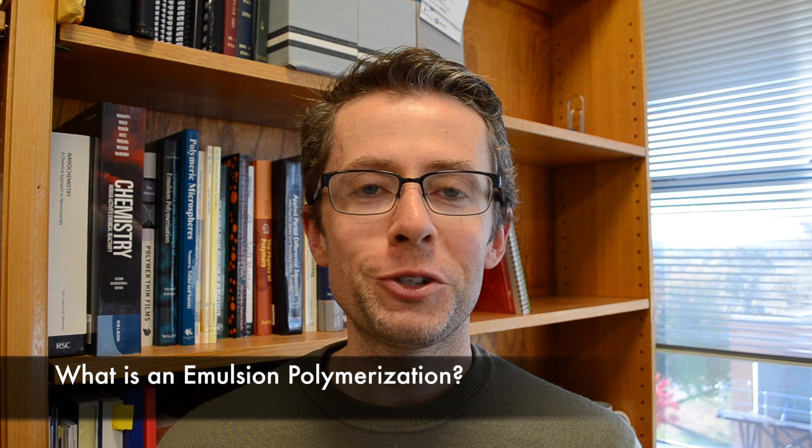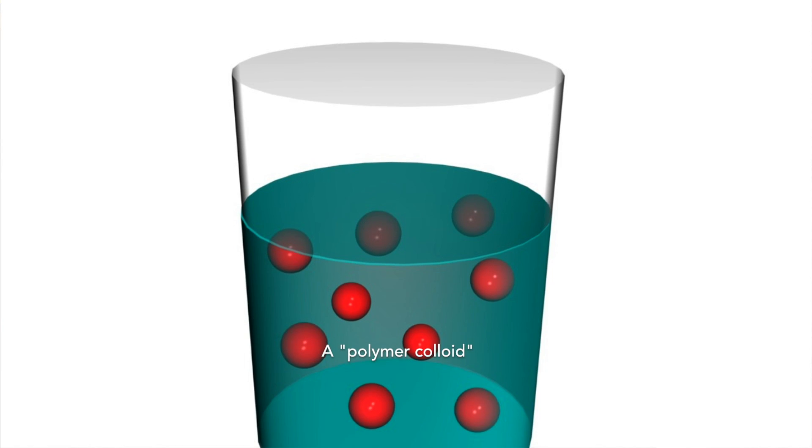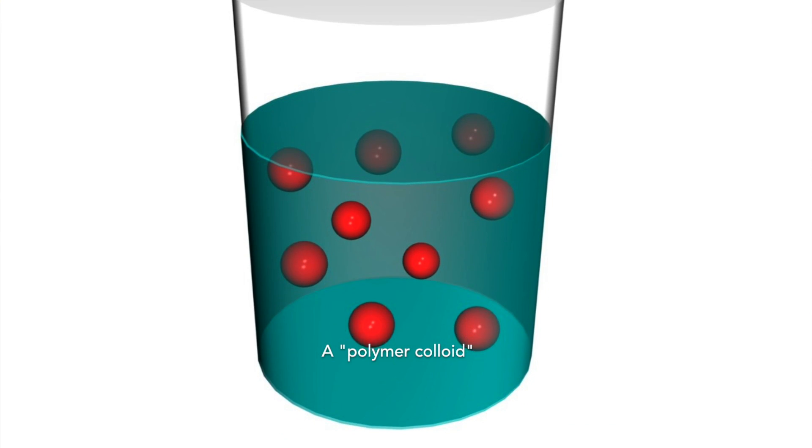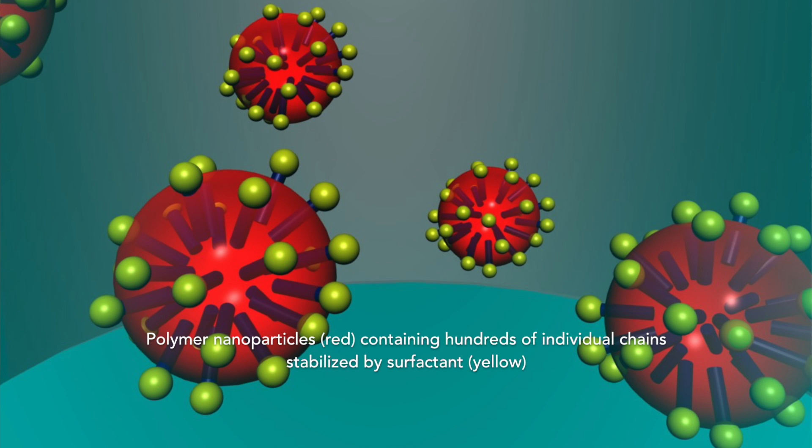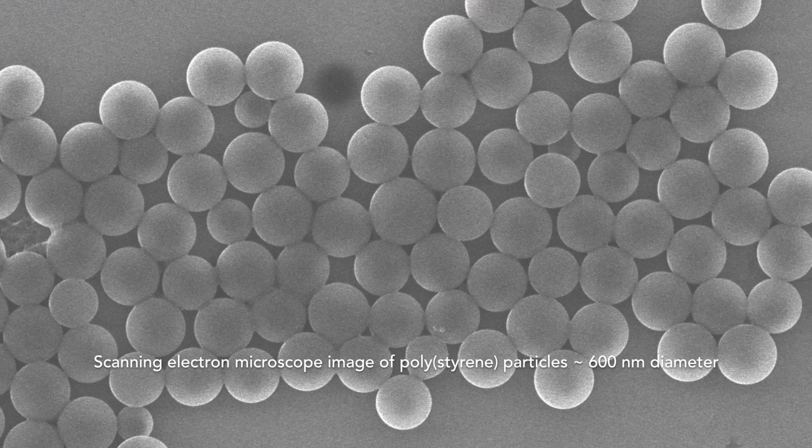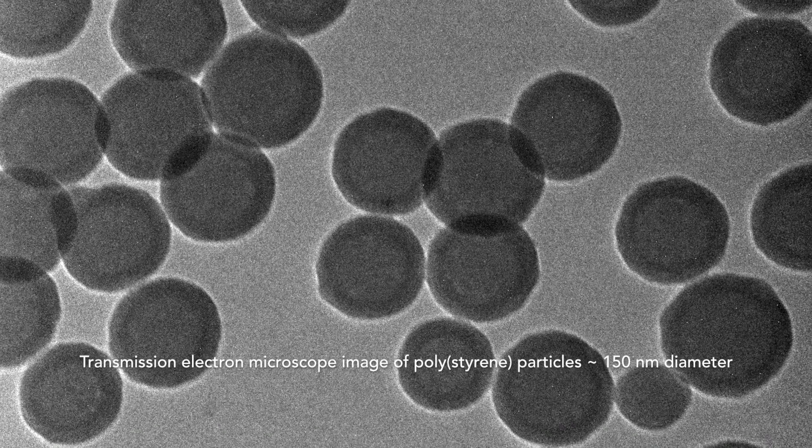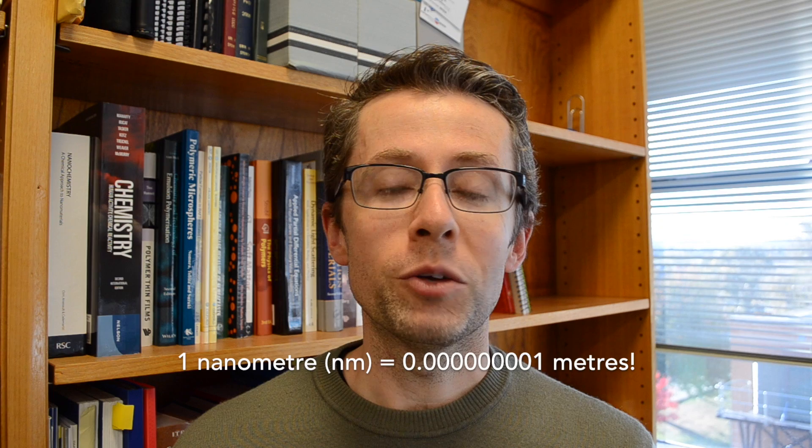So rather than just making individual polymer chains that are floating around in solution, what we've done in an emulsion polymerization is make what is known as a polymer colloid. We have nanoparticles of polymer floating around in water, stabilized by our surfactant. Now these particles are very small. We need to use a very powerful microscope known as an electron microscope to actually see them, and typically they are anywhere from 100 through to 1000 nanometers in size, much smaller than the width of a human hair.